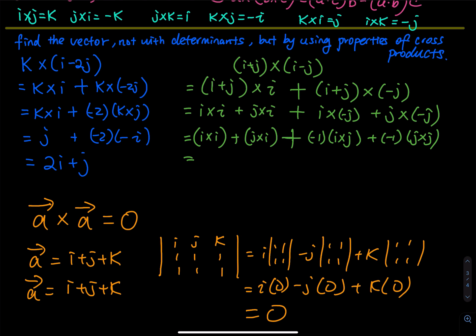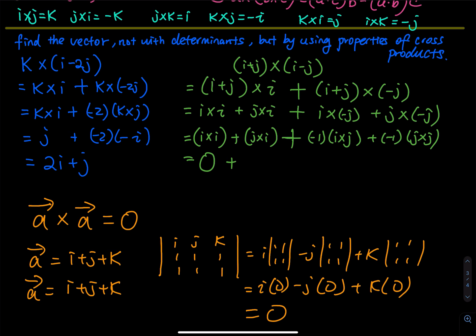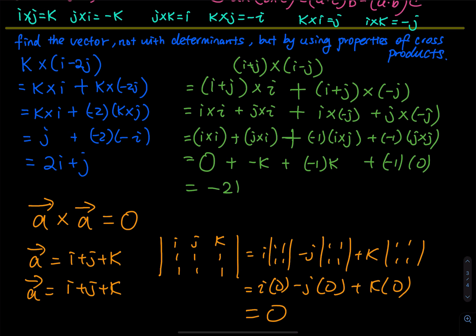As a result, i cross i is zero. Then j cross i is negative k. Then negative one times i cross j — i cross j is positive k — gives negative k. Then j cross j is also zero. So at the end of the day we have negative k minus negative k, which gives negative 2k. That is the answer.